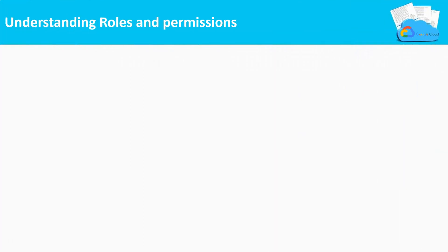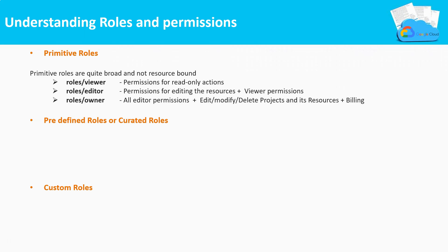Understanding roles and permissions: GCP provides three different types of roles. They are primitive roles, predefined roles or curated roles, and custom roles. Within the primitive type, we have three roles: viewer, editor, and owner. These primitive roles are not fine-grained with permissions.